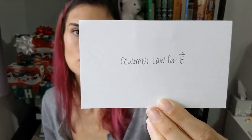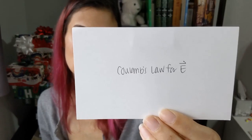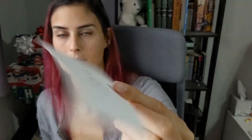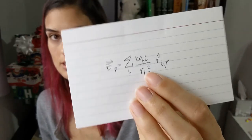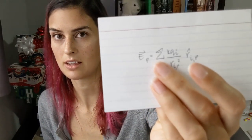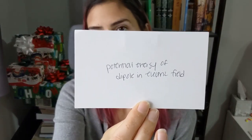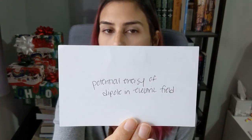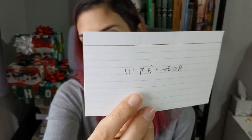Coulomb's law for electric fields: E equals the sum of k Q sub i over r sub i squared in the r-hat sub i direction — basically summing Coulomb's law, but with only one charge since you're talking about the electric field. The potential energy of a dipole in an electric field: U equals negative p dot E, or negative pE cosine theta — where p is the dipole moment.